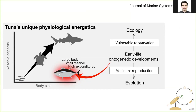What we learned about tunas is that, in comparison to most species which follow a body size scaling relationship where reserve capacity increases with body size, tunas are actually very large but have very small reserves. On top of that, they also have high expenditures — a very fast lifestyle. We learned that these characteristics really arise from early life genetic developments, which have effects on both the ecology and evolution of these species.